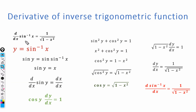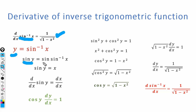Now let's begin with the proof that the derivative of sine inverse of x is equal to 1 over the square root of 1 minus x squared. To prove this, let's suppose y is equal to sine inverse of x. Now if we take sine on both sides, on the left hand side we will have sine of y, and on the right hand side, sine and sine inverse cancel out, and we have sine y is equal to x.